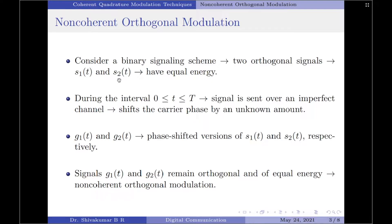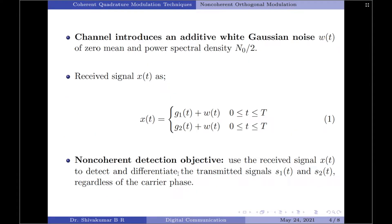It is assumed that the signals g1(t) and g2(t) remain orthogonal and of equal energy irrespective of the unknown carrier phase. We refer to such a signaling scheme as non-coherent orthogonal modulation. The channel also introduces additive white Gaussian noise w(t), which has a mean equal to zero and a power spectral density of N₀/2.